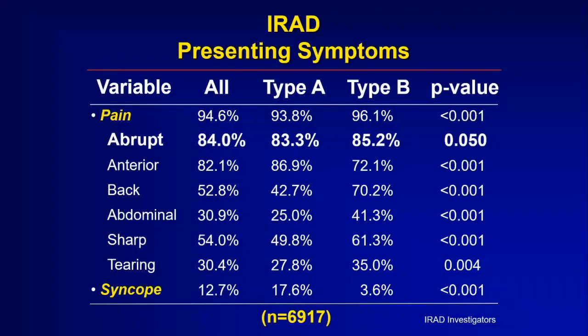If you ask how patients with aortic dissection present, the overwhelming answer is pain — 95% of patients have pain. For most of them — about 85% — it's abrupt in onset, and it's often terrible. It's usually in the chest, in the back, or sometimes in the belly. The patient will often describe it as sharp and sometimes as tearing. What really designates aortic dissection pain for doctors is how it starts in an instant and is horrible — patients have a photographic memory of where they were and what they were doing when the pain started. Fainting or stroke occurs in about 10% of patients, where the dissection has affected blood flow to the brain.